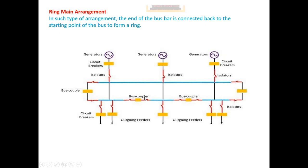Disadvantages of the ring bus scheme: future expansion is not possible for further development. During breaker maintenance, the ring can be separated into two sections. The construction is also complex.